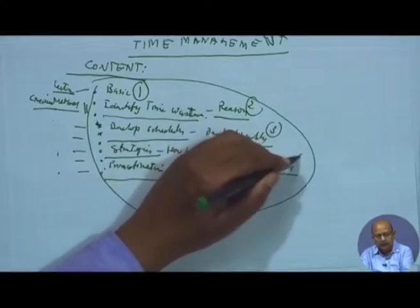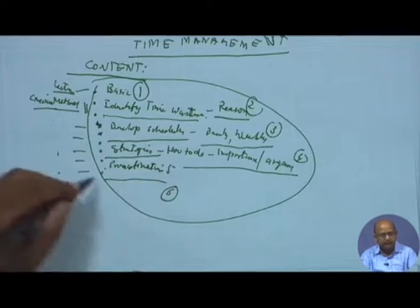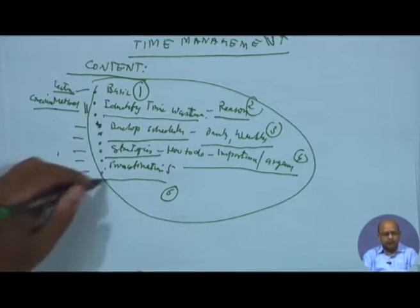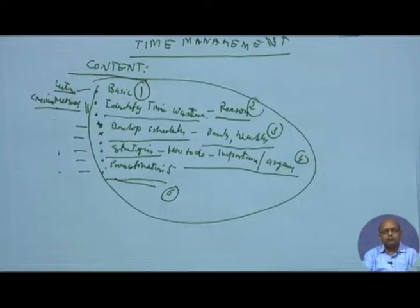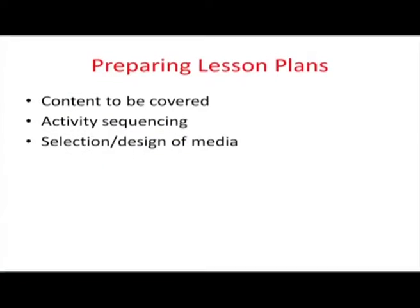After identifying the content, you do activity sequencing — which activity comes first, second, third, and so on — planning all the different activities to be covered in a day. Then you decide which method and media to use: whether audio-visual, lecture, business games, or simulations. The method is decided based on what you want to deliver — what you need to deliver determines what kind of method is appropriate.